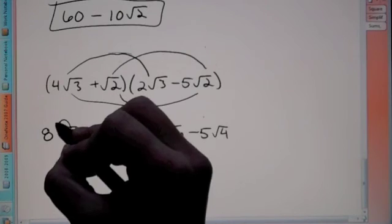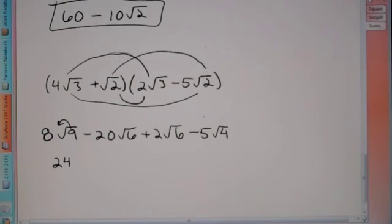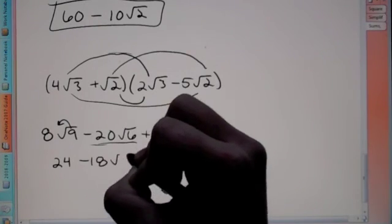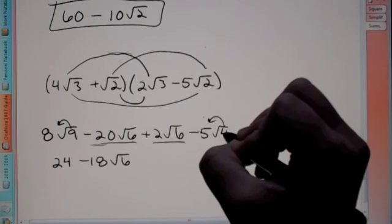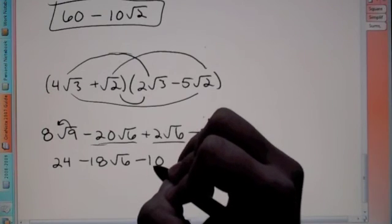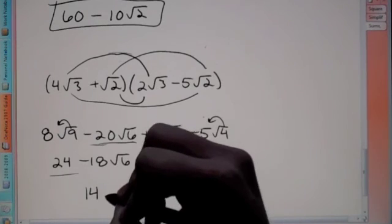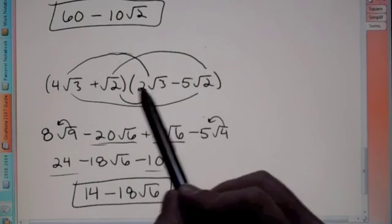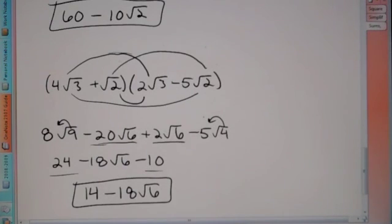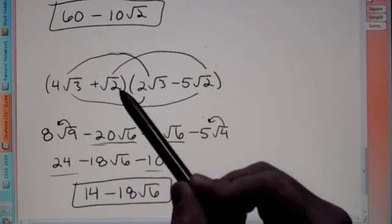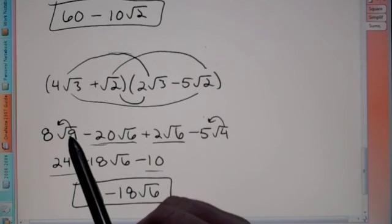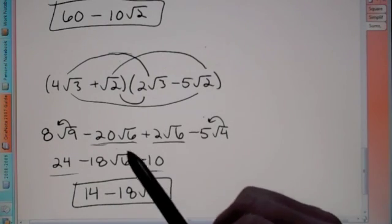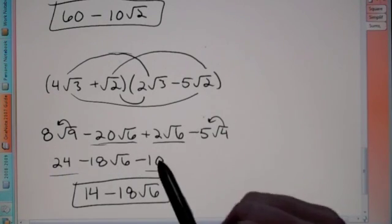Now we simplify. The square root of 9 is 3, and 3 times 8 is 24. We have like terms: negative 20 root 6 plus 2 root 6 is negative 18 root 6. The square root of 4 is 2, times 5 gives us 10. We can combine like terms: 24 minus 10 is 14, and then we just have minus 18 root 6. So our final answer is 14 minus 18 root 6. When set up with two terms in two parentheses, we FOIL: First, Outer, Inner, Last, then simplify any square roots and combine like terms.